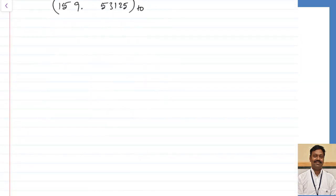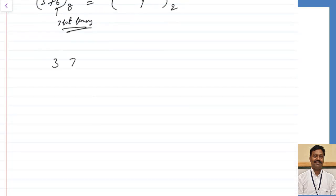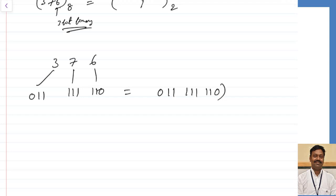Now let us convert octal to binary in an easier way. Take 376 in base 8 and convert to base 2. Each octal digit is represented with a 3-bit binary equivalent. So 6 = 110, 7 = 111, and 3 = 011. Combining these gives the binary value 011111110, or equivalently 11111110 in base 2.